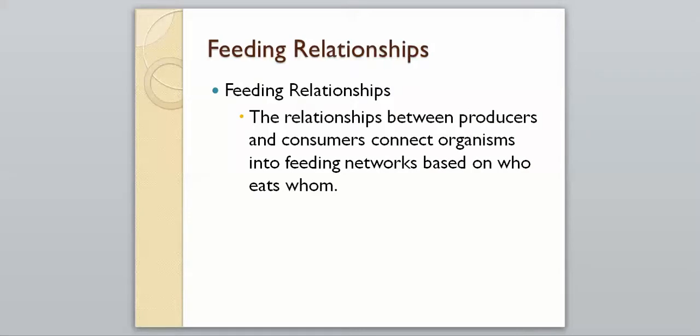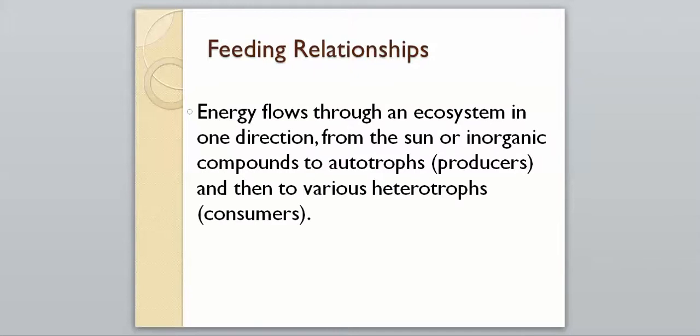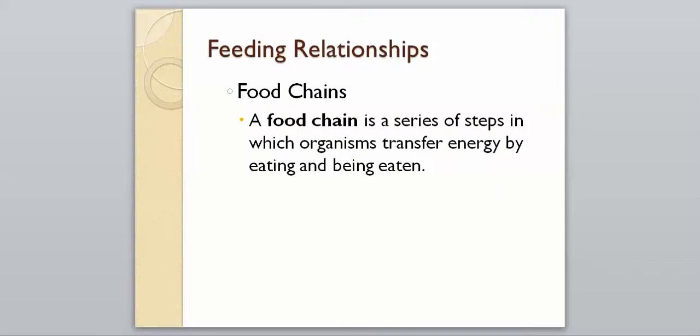The relationship between producers and consumers connect organisms into feeding networks based on who eats whom. There isn't a single organism out there that could survive on their own, they're going to need some type of other organism to help them survive. Energy will flow through an ecosystem in one direction, from the sun to the autotrophs and then to the various heterotrophs. Or it could start from inorganic compounds to the autotrophs and then to various heterotrophs. One way that this can flow is in a food chain, which is a series of steps in which organisms transfer energy by eating and being eaten.